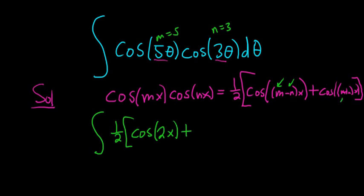And then we add them. It's m plus n. So 5 plus 3 is 8. Cosine of 8x dx.